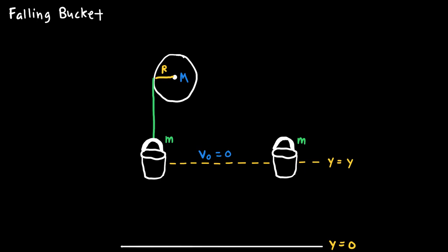I'd like to start by drawing in all of the forces that act on these objects — both of the buckets and also the pulley itself. On the bucket on the right, the only force is the gravitational force pointing downward with magnitude mg. That same gravitational force acts on the left bucket, and then there's also an upward tension force due to the rope.